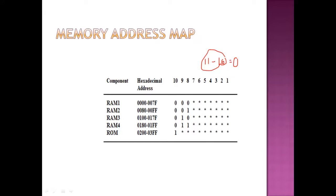Now let's find the address range for RAM 1. The lower and higher ranges are found as follows: bits 11 to 16 are always 0. For the minimum range, we insert all zeros in bit positions 1 to 7. For the maximum range, we insert all ones in bit positions 1 to 7, giving us boundaries of 0000 to 007F.